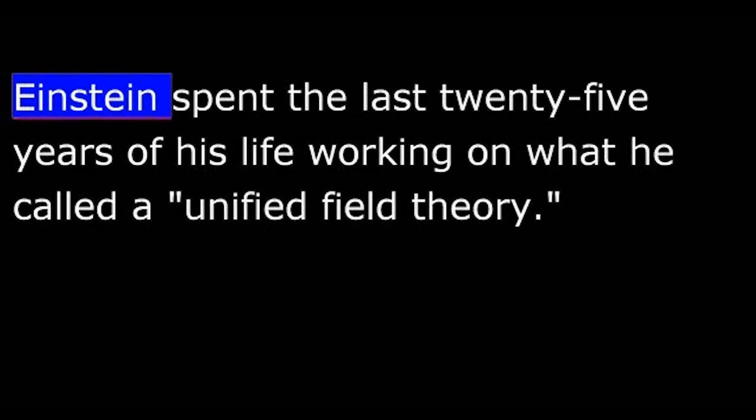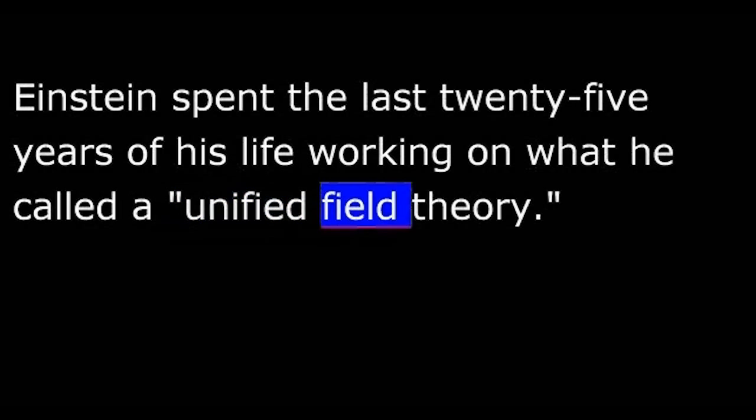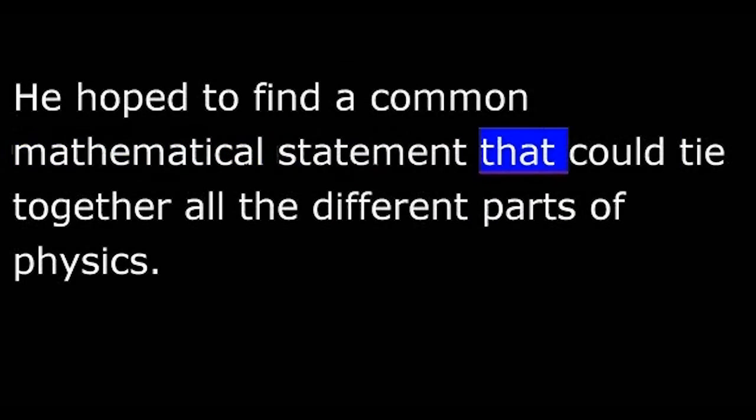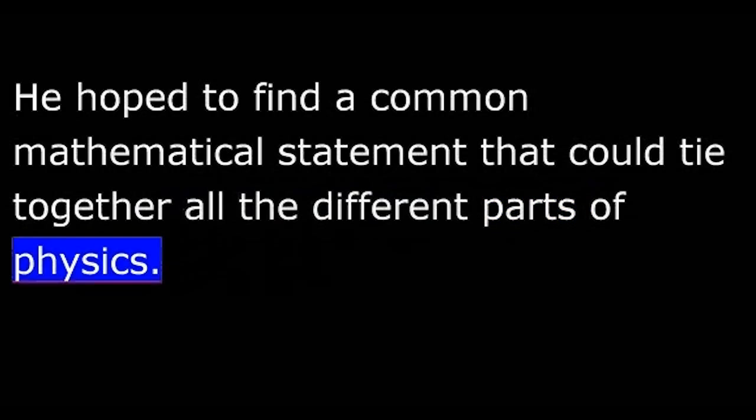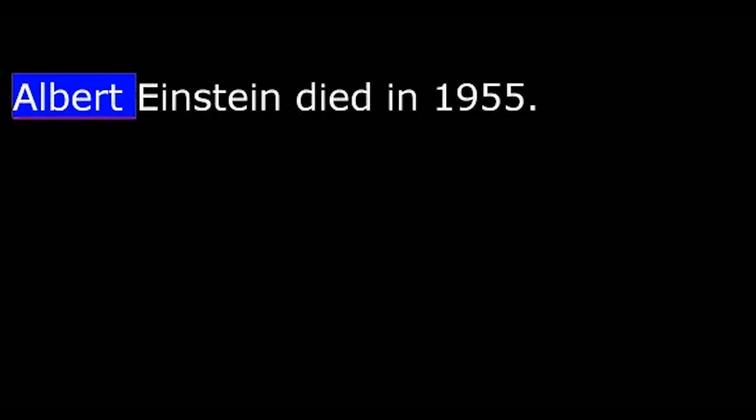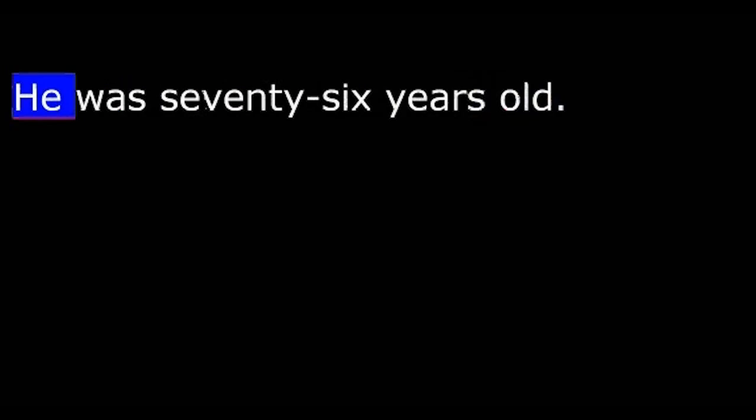Einstein spent the last twenty-five years of his life working on what he called a unified field theory. He hoped to find a common mathematical statement that could tie together all the different parts of physics. He did not succeed. Albert Einstein died in 1955. He was 76 years old.